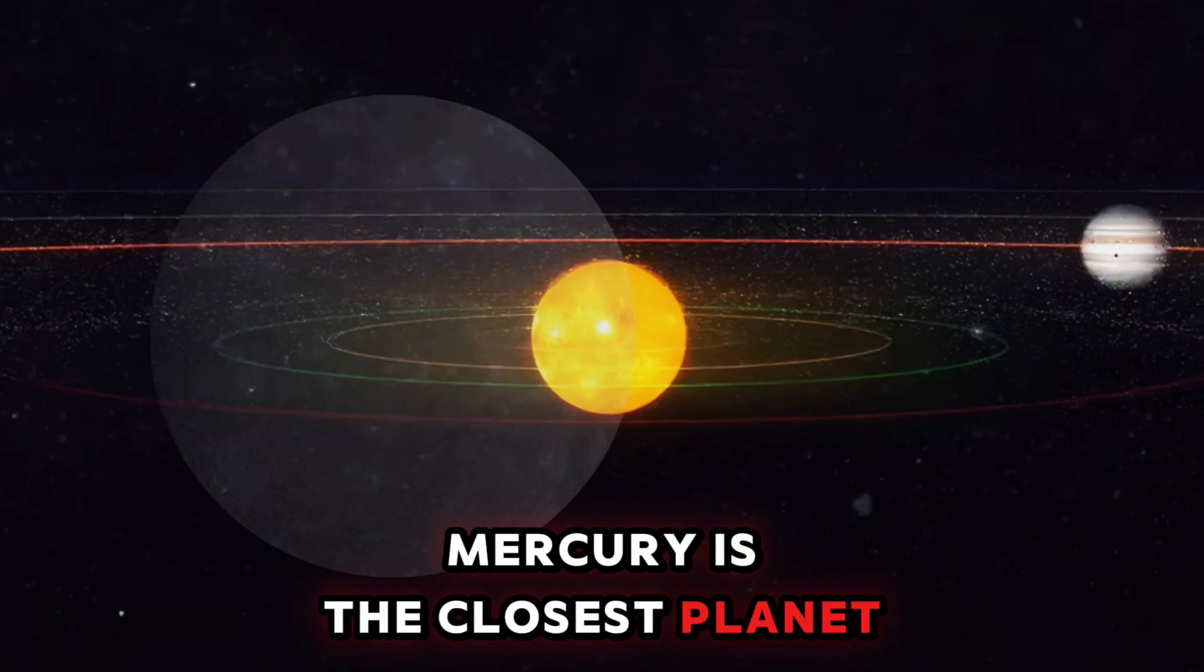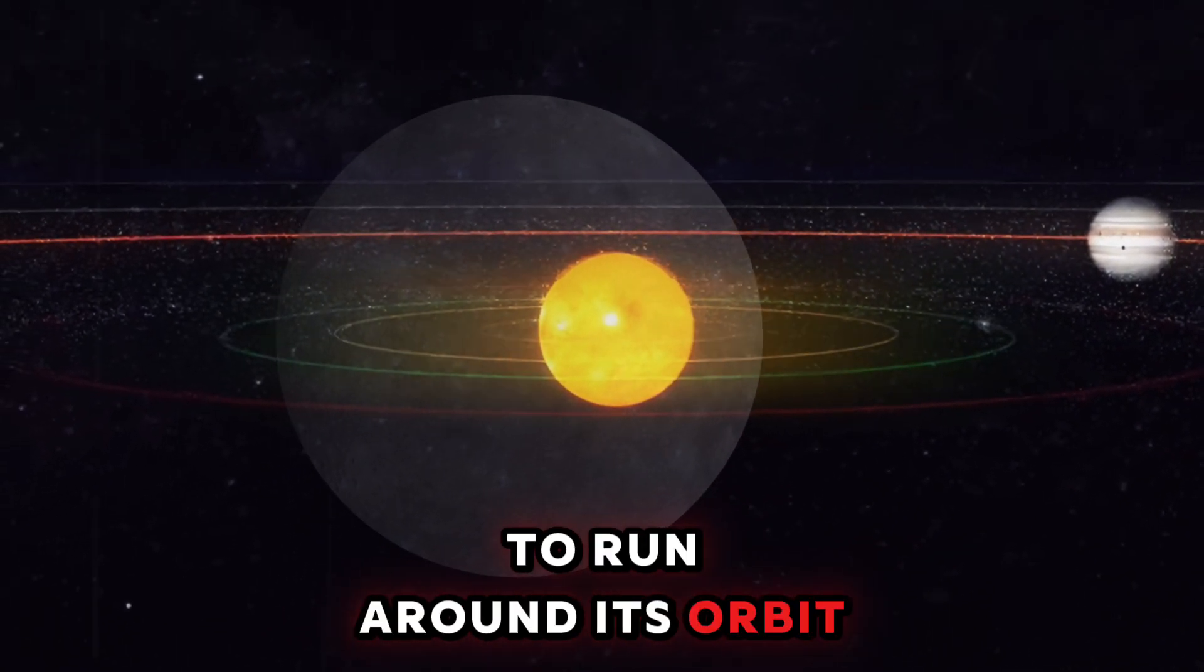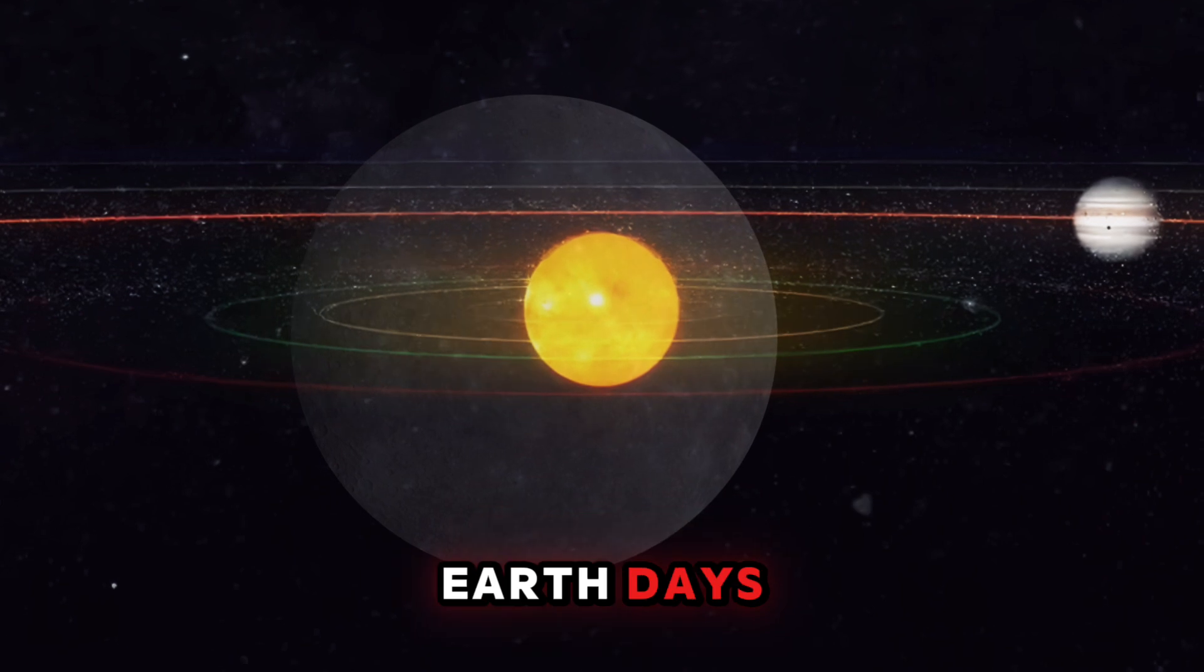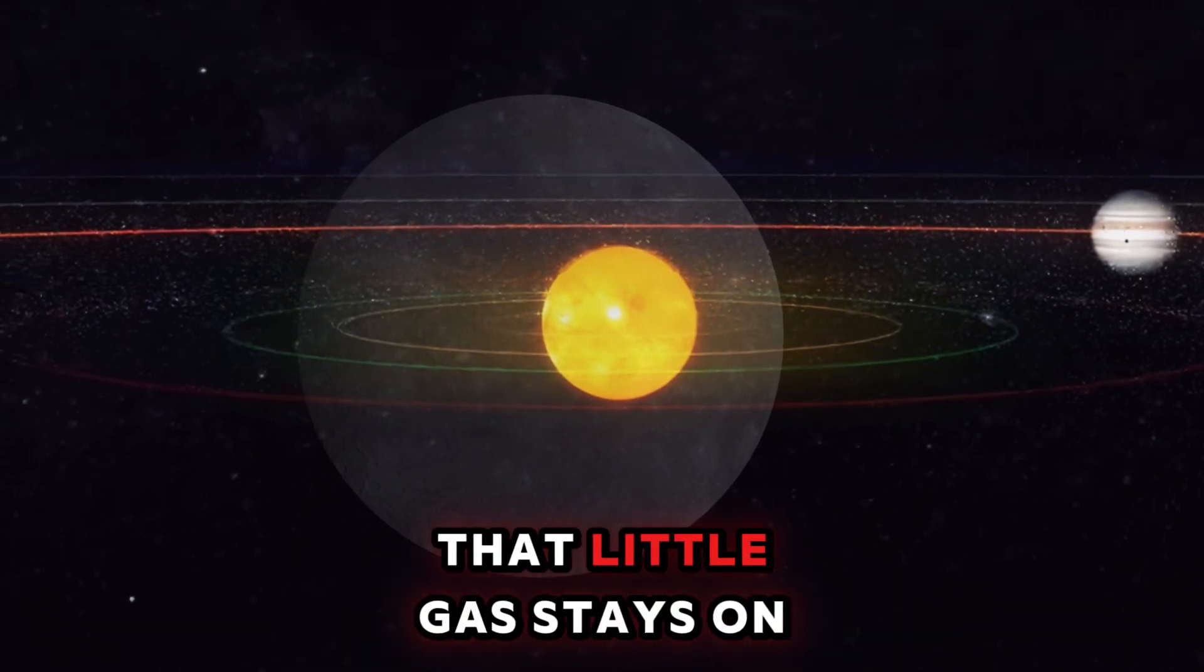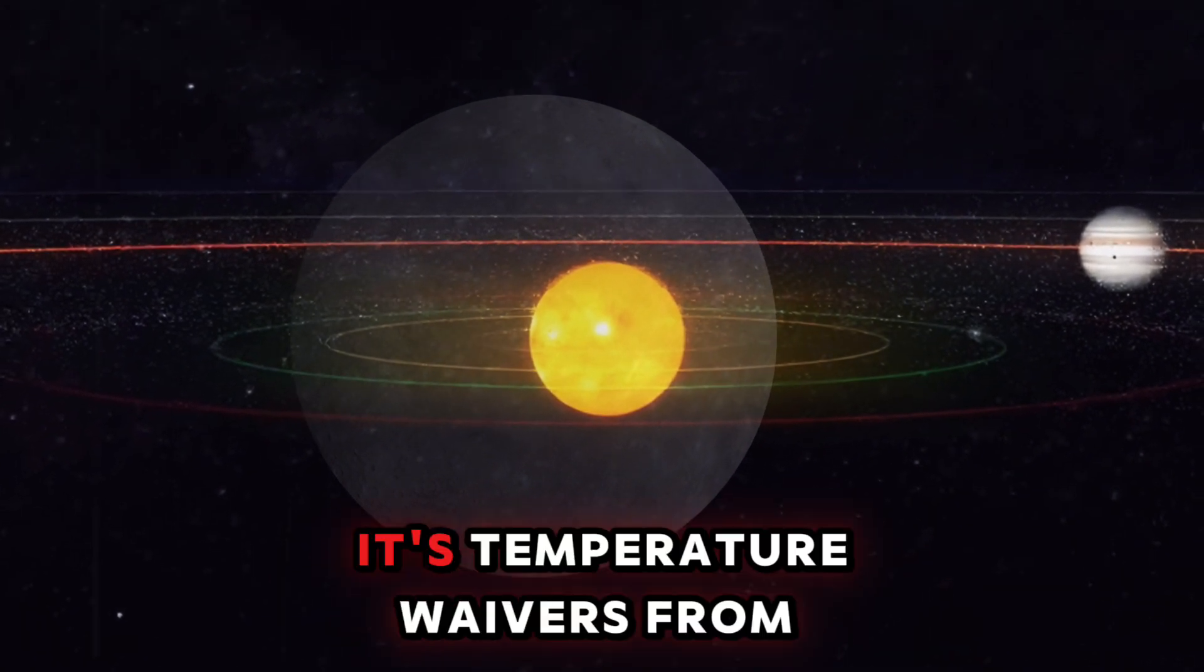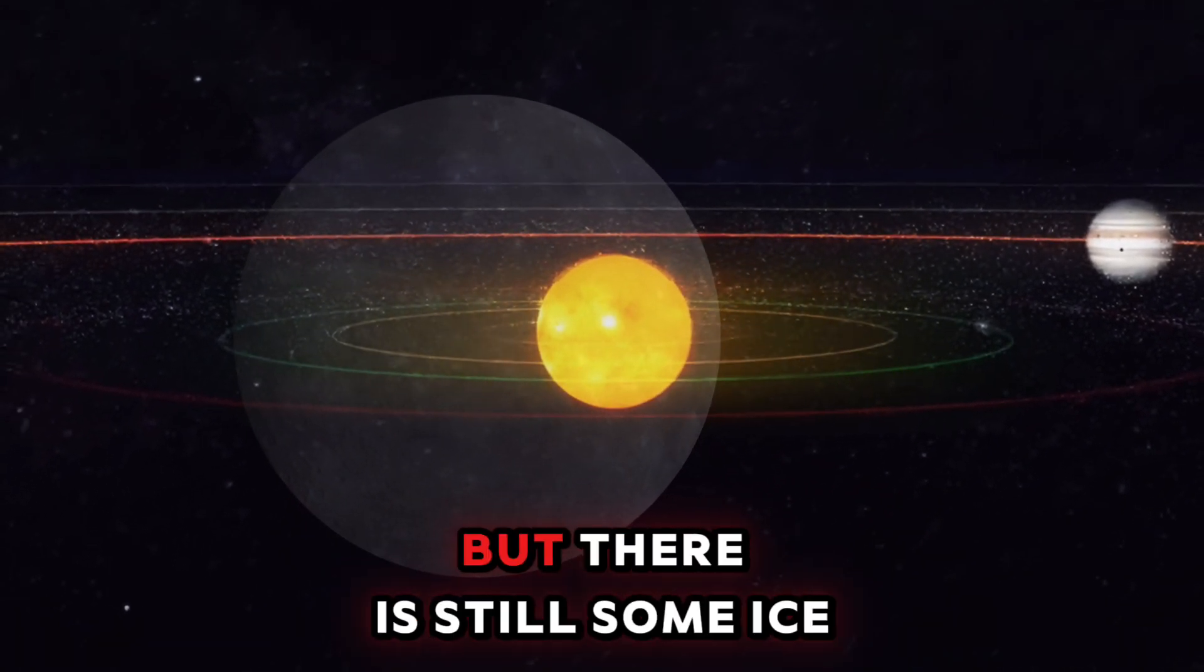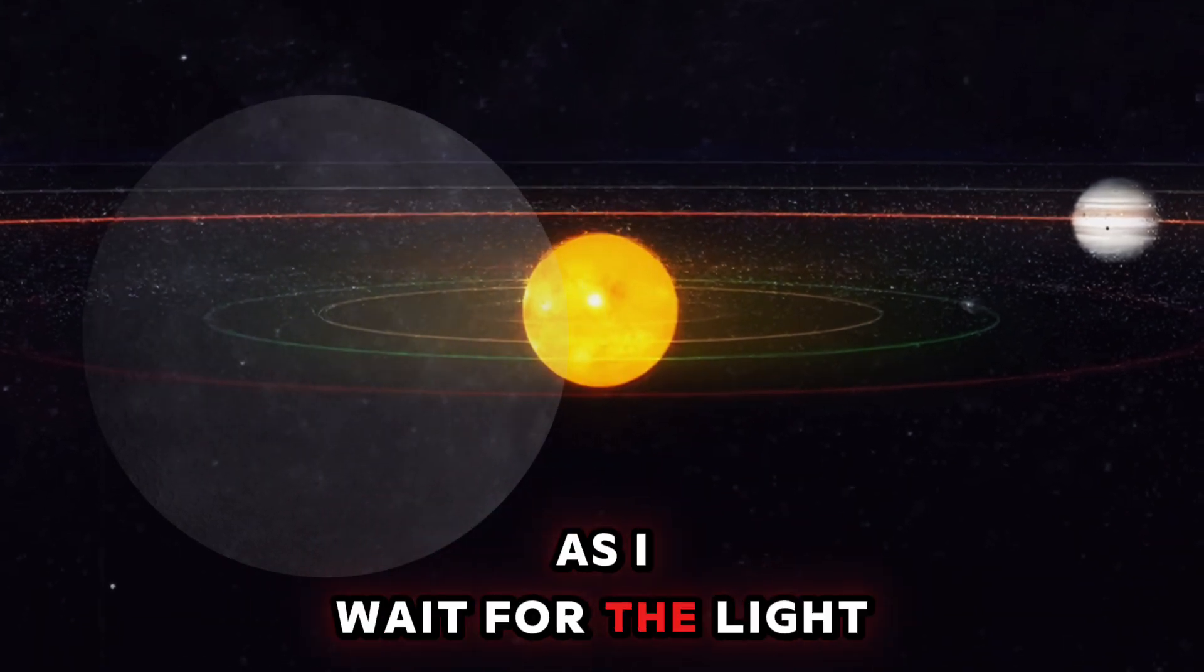Mercury is the closest planet to the sun, and as such, it takes the least time to orbit. Its year is only 88 Earth days, and the solar wind means that little gas stays. Its rocky surface is barren and full of craters. With no atmosphere, its temperature wavers from 800 Fahrenheit to minus 300 at night. But there is still some ice in craters away from the light.